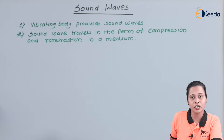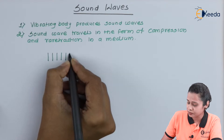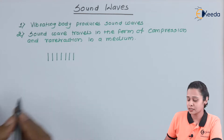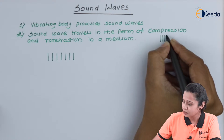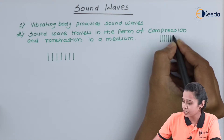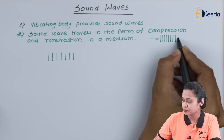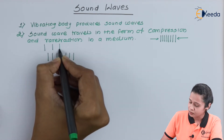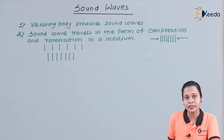Let us see what is meant by compression and rarefaction. Generally, we have a steady air column. But because of vibration, pressure exerts on the steady air column and then there is compression of the air column. This is nothing but compression. And rarefaction means that compared to normal, there is a release of pressure.